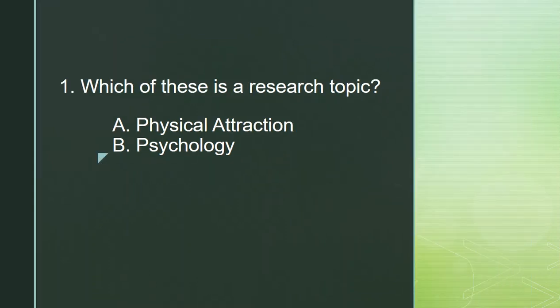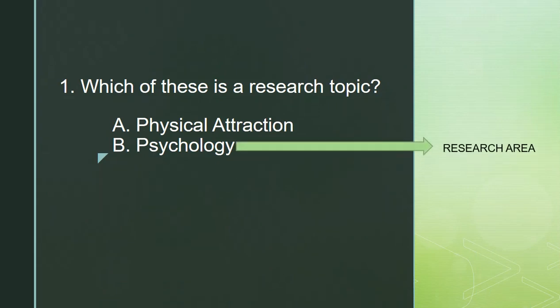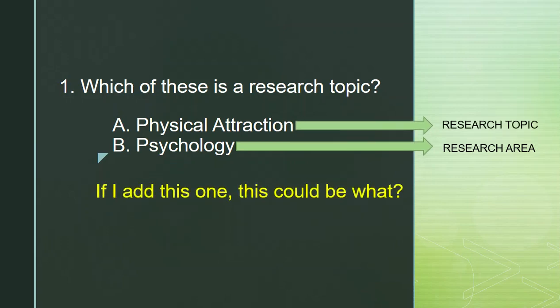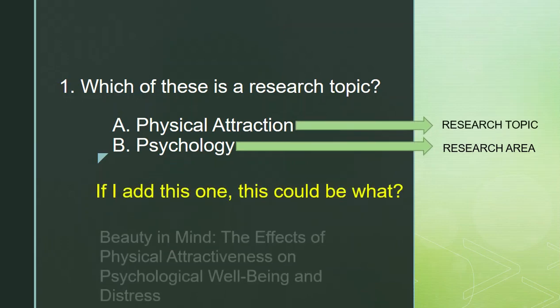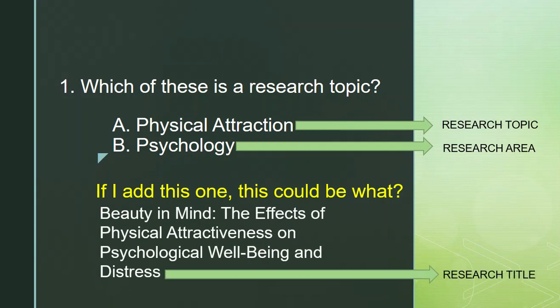If A is the answer, then B is an example of a research area. And again, A is a research topic. If I add this one, this could be what? This is an example of a research title.